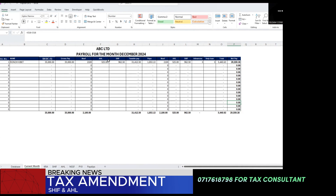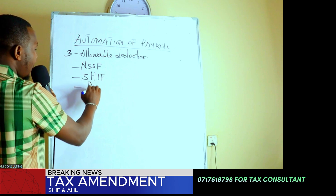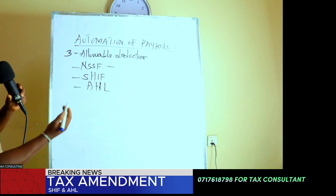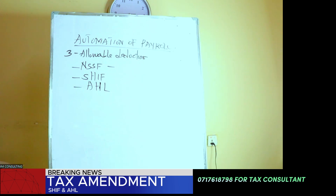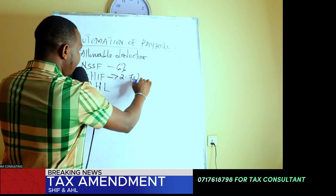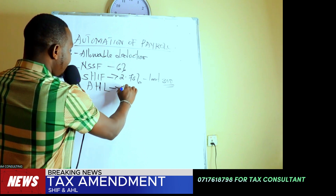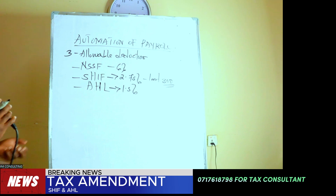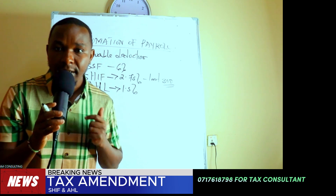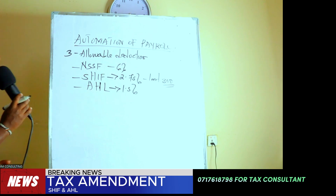To arrive at taxable pay, you subtract those three deductions, then calculate PAYE. NSSF is calculated on scales with upper and lower limits at 6%. SHA is 2.75% but has a minimum limit of 300 shillings. Housing levy is 1.5%. Due to the tax amendment, SHA has changed from a relief to an allowable deduction, so we no longer have the relief on it.